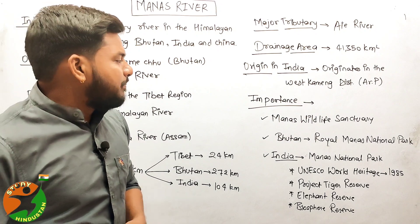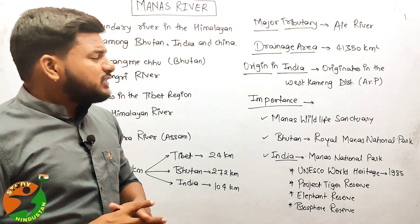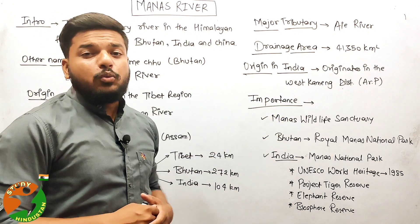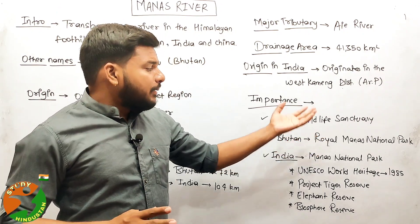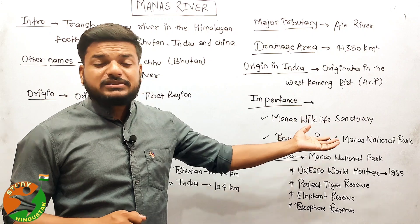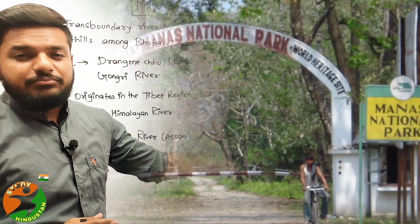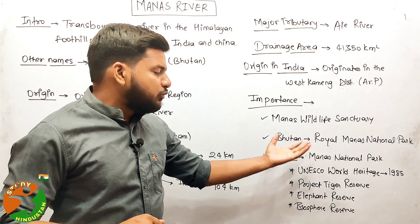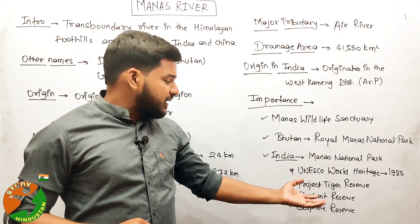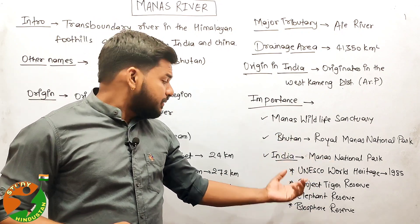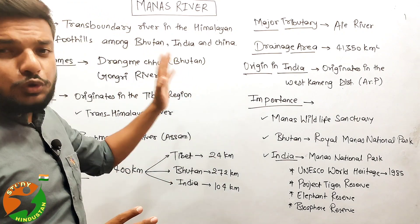The Manas Wildlife Sanctuary is very important — the Manas River flows nearby this wildlife sanctuary. The Royal Manas National Park is located in Bhutan, but its extension in India is the Manas National Park. It was first recognized by UNESCO as a World Heritage Site in 1985. This national park also contains a Project Tiger reserve, an elephant reserve, and a biosphere reserve.